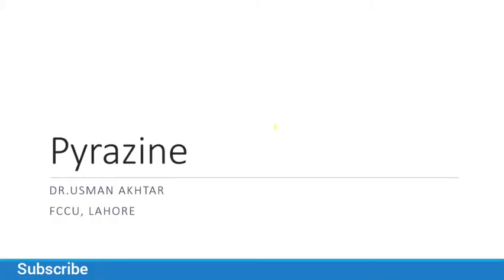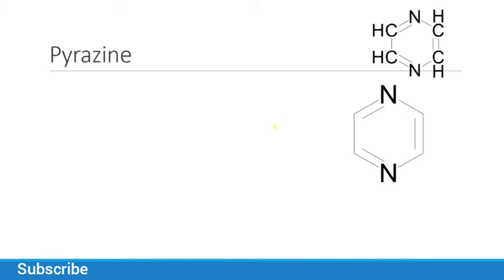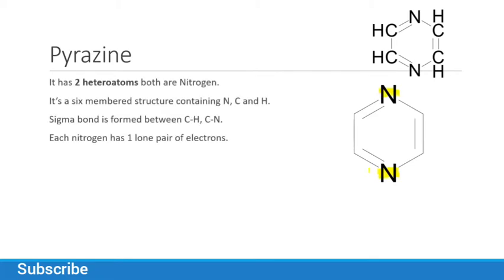Today we will study pyrazine. It is a heterocyclic compound with two hetero atoms, both are nitrogen. It has a six-member ring. Pyrrole contains one nitrogen in a five-member ring, and pyridine is a six-member ring with one nitrogen as a hetero atom. A sigma bond is formed between carbon-hydrogen and carbon-nitrogen.